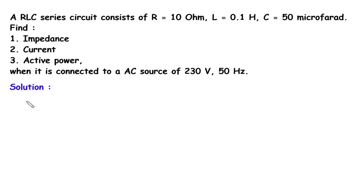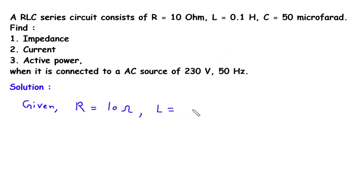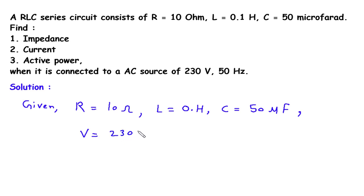Solution. First of all we will write what is given. Resistance value is given: R equal to 10 Ohm. Inductance value is given: L equal to 0.1 Henry. Capacitance value is given: C equal to 50 microfarad. Voltage value is given: V equal to 230 volt. Frequency value is also given: F equal to 50 hertz.